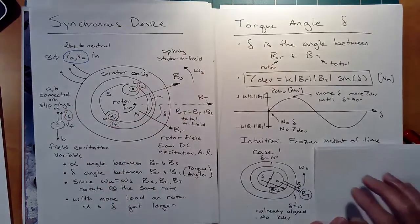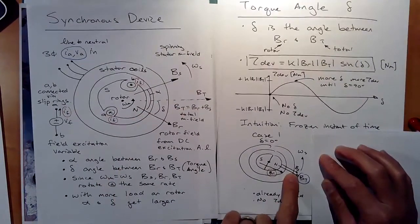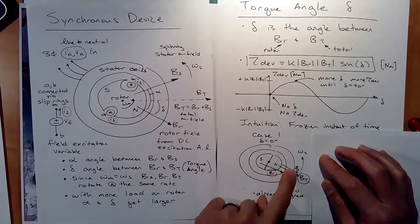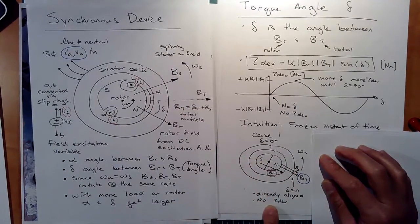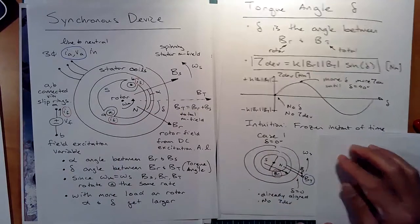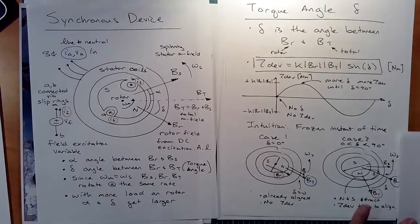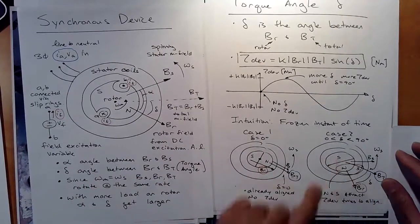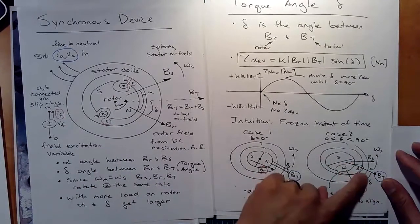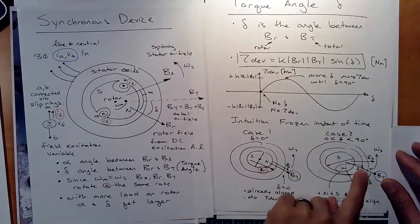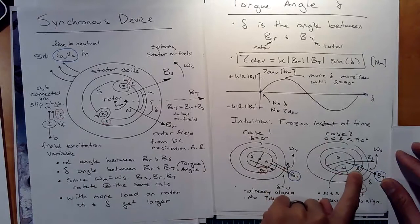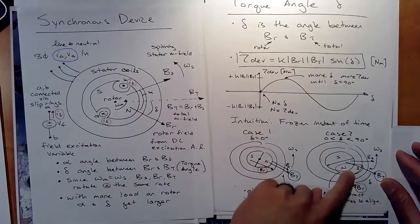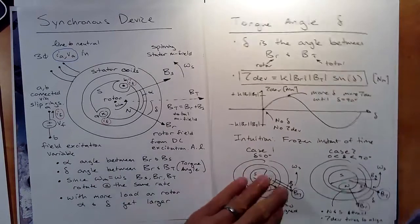At a frozen instant in time: if BT, BR, and BS are all aligned, delta is zero and there's no torque. As load increases, BR starts to drag and delta gets bigger. You can think of BS as a south pole attracting the north pole of BR like a carrot in front of a donkey — but if there's too much load, it breaks away.